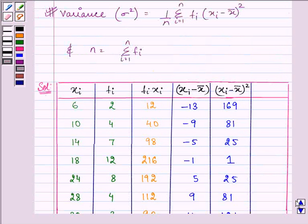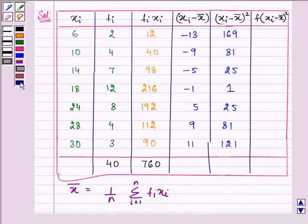Now according to the formula we need to multiply the square with fi. So here we are finding fi multiplied by xi minus mean the whole square. So now it is equal to 338 that is 2 into 169, 4 into 81 giving us 324, 7 into 25 giving us 175, then 12 into 1 giving us 12, 8 into 25, 200.